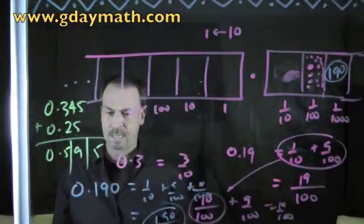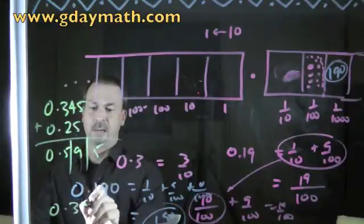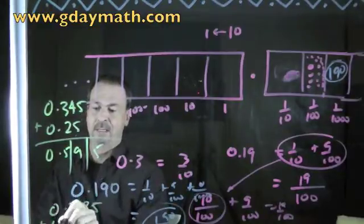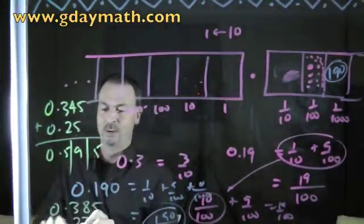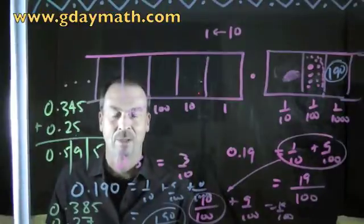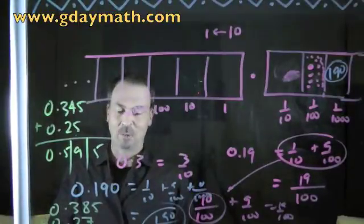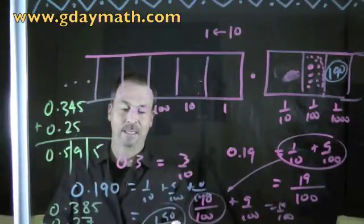Or something more interesting: 0.385 plus 0.27. Now it's more interesting. 0.5155 is absolutely valid and correct. If you want to fix up for the rest of the world, ten would explode, leaving five behind. This is 0.655.